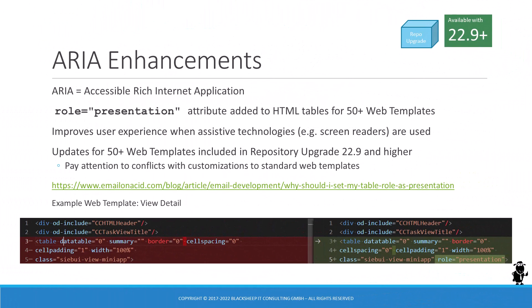If you execute the Optional Repository Upgrade, for instance to secure the aforementioned SWICFG Object Broker Business Service, you'll notice that the resulting integration workspace contains a lot of updated web template definitions. In an effort to improve the experience for users relying on assistive technologies such as screen readers, Oracle has added the role equals presentation attribute to many web templates, including popular standard templates such as view detail. If your customizations affect any of these standard web templates and you are planning to run the repository upgrade in 22.9 or any future update, it might be prudent to plan some extra time to ensure that template code customizations do not get overridden by the new standard.